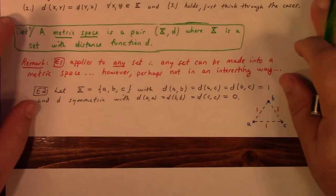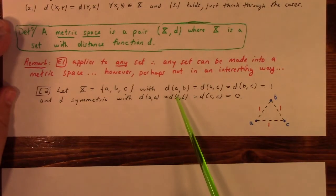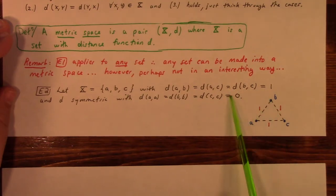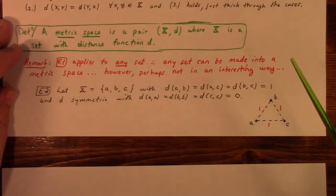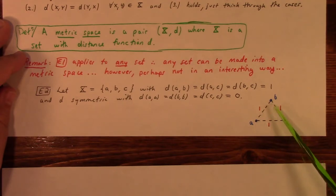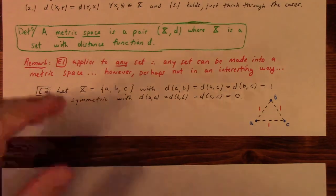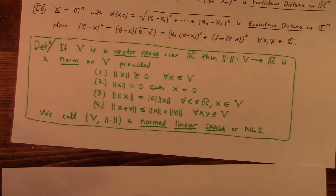Here's another example: a three-point set A, B, C. The distance from A to B, from A to C, and from B to C is 1, because those are distinct points, and otherwise you've got distance 0. Here's a kind of picture of it — A, B, C with dotted lines with numbers to indicate the distance. That kind of diagram shows the distances between the points, similar to pictures I made when I studied graph theory.